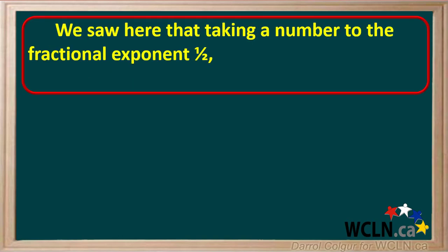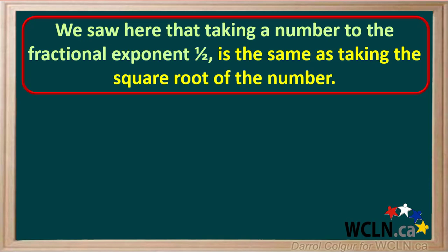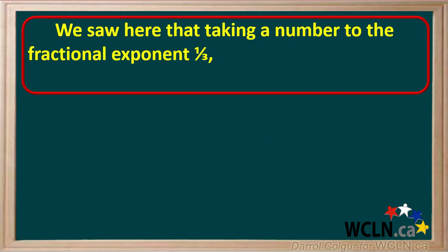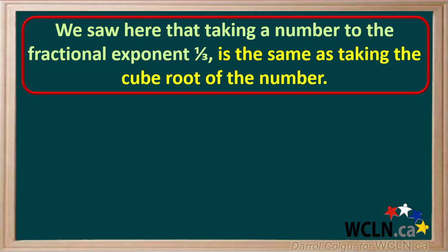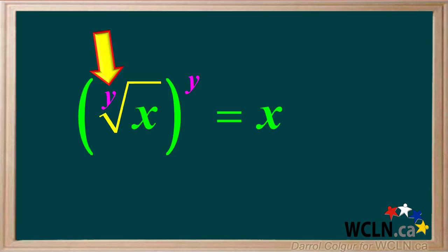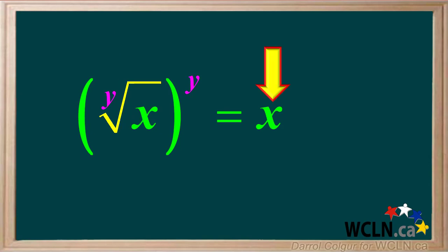We saw here that taking a number to the fractional exponent one-half is the same as taking the square root of the number, or x to the power one-half is the same as the square root of x. Similarly, x to the power one-third is the same as the cube root of x. We also discovered that taking the y-th root of a number and raising it to the power y just gives us the original number. These are all things that will help you later on.